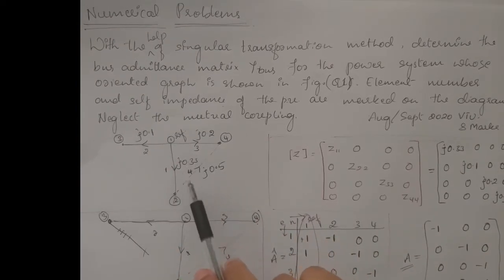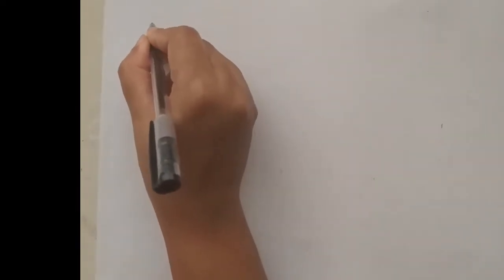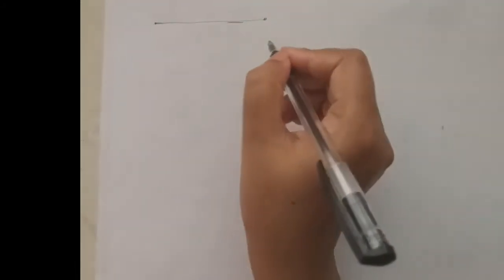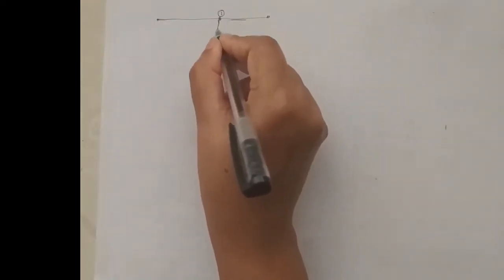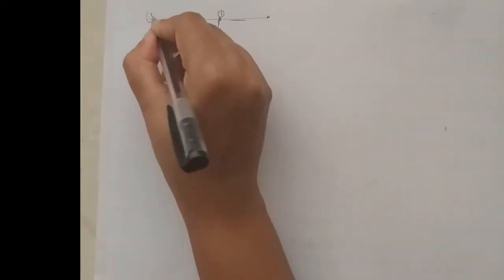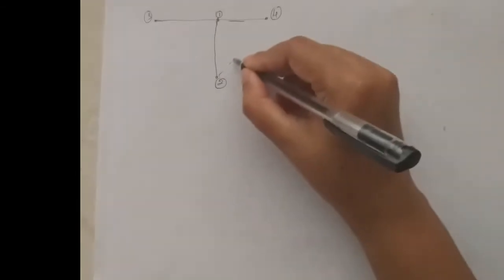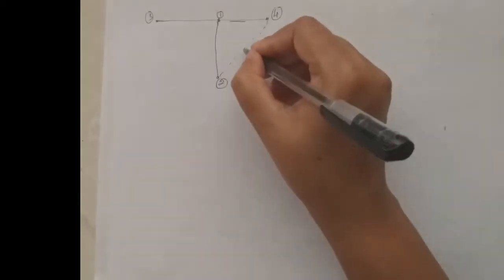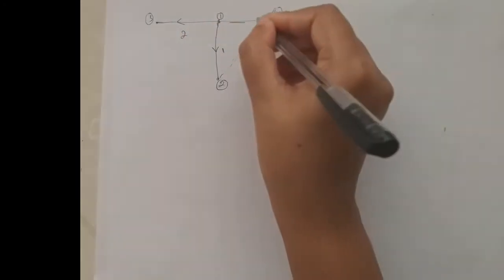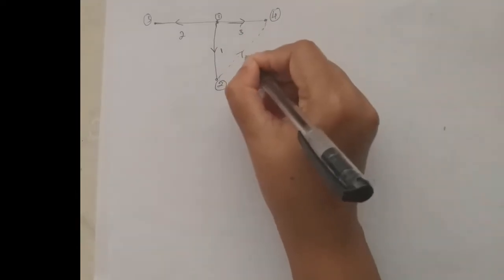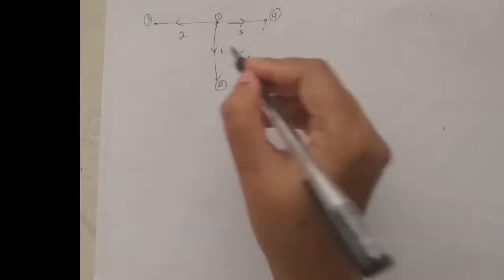From the network diagram we have to form the Y-bus matrix. First, we have to form the A matrix. The matrix A can be formed using the graph of the network. The graph is already shown. This is the first node, second node, third node, and fourth node. There is a link between nodes two and four. The first element is connected between one and two, second element between one and three, third element between one and four, and fourth element between two and four.